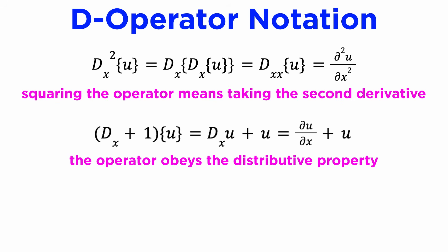Operators in parentheses, like D_x plus 1, means distribute the brackets and apply each operator to whatever's in front, so D_x plus 1 of u means partial u partial x plus u.